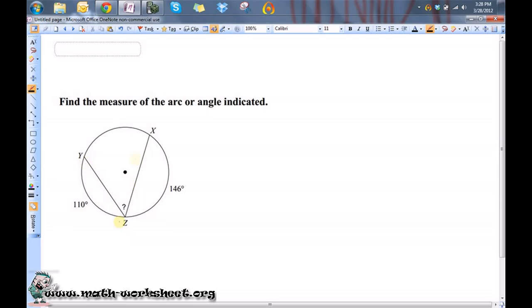Now, this is an inscribed angle. You can tell it's an inscribed angle because all of the points that make the angle are on the circle.